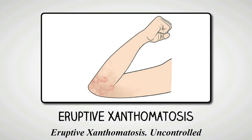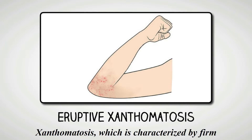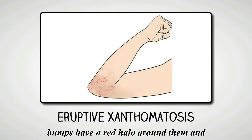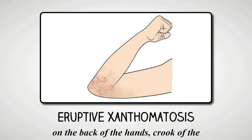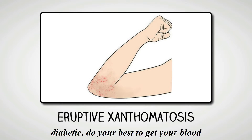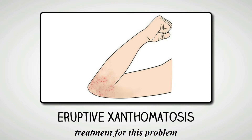Eruptive Xanthomatosis. Uncontrolled diabetes can cause eruptive xanthomatosis, which is characterized by firm, yellow, pea-like skin growths. These small bumps have a red halo around them and cause a lot of itching. It usually occurs on the back of the hands, crook of the elbows, feet, arms and buttocks. If you are diabetic, do your best to get your blood glucose levels down, as it is the main treatment for this problem.